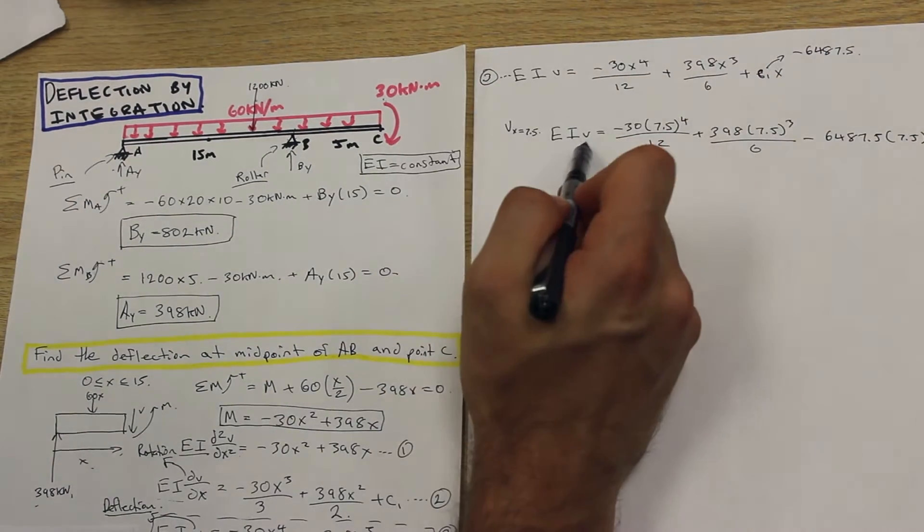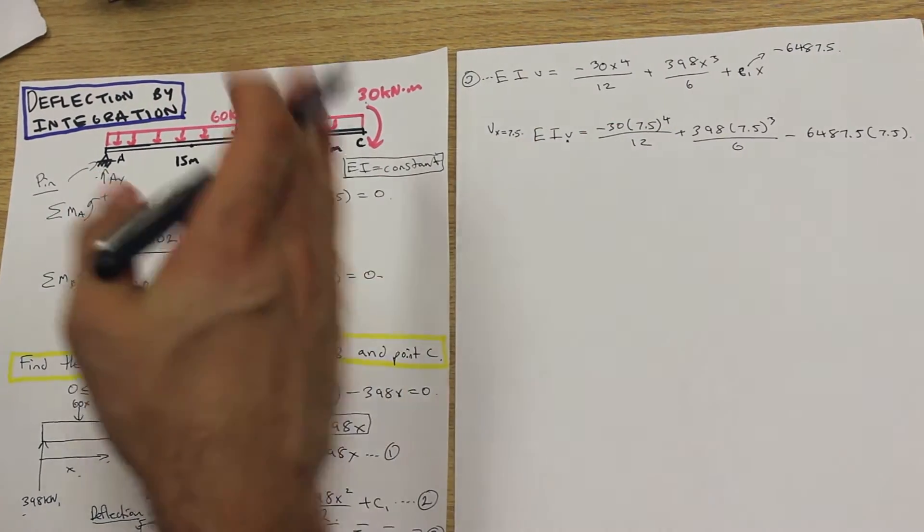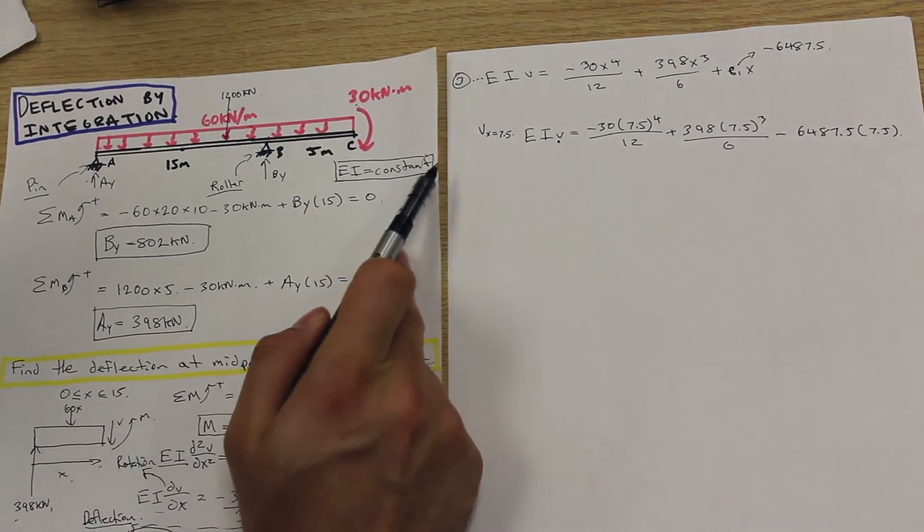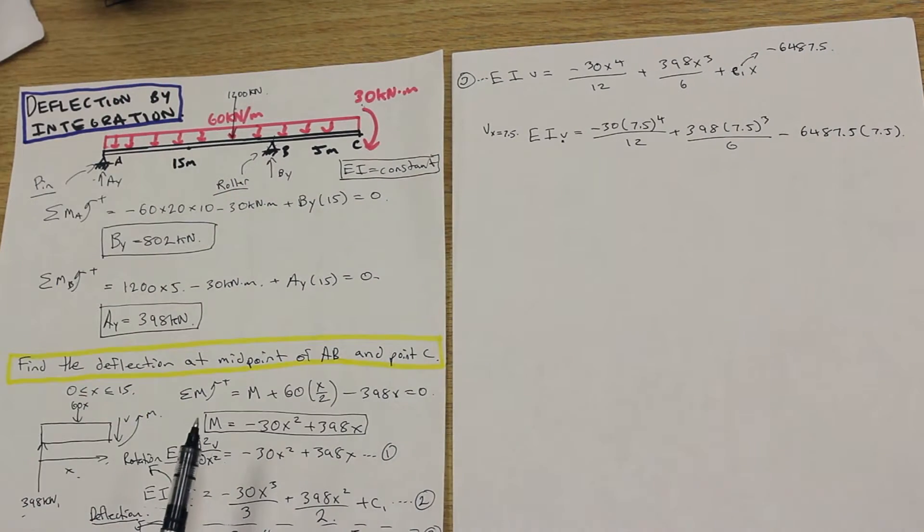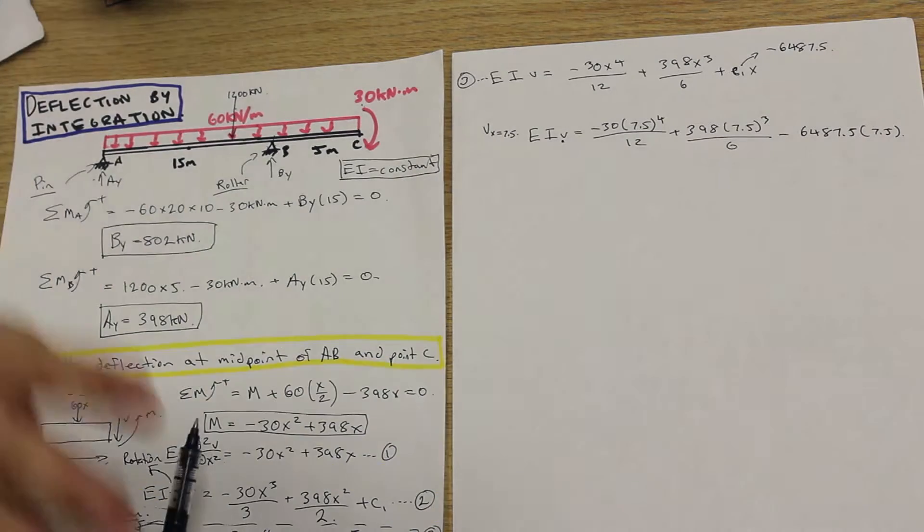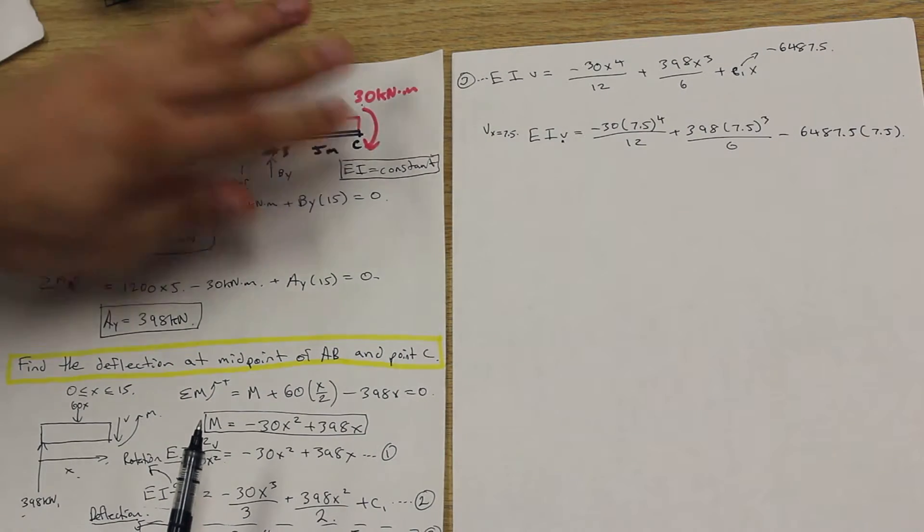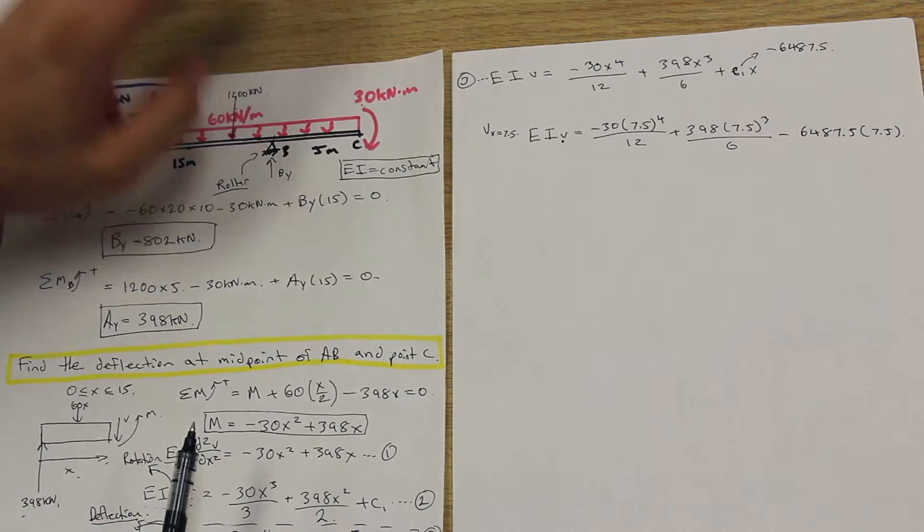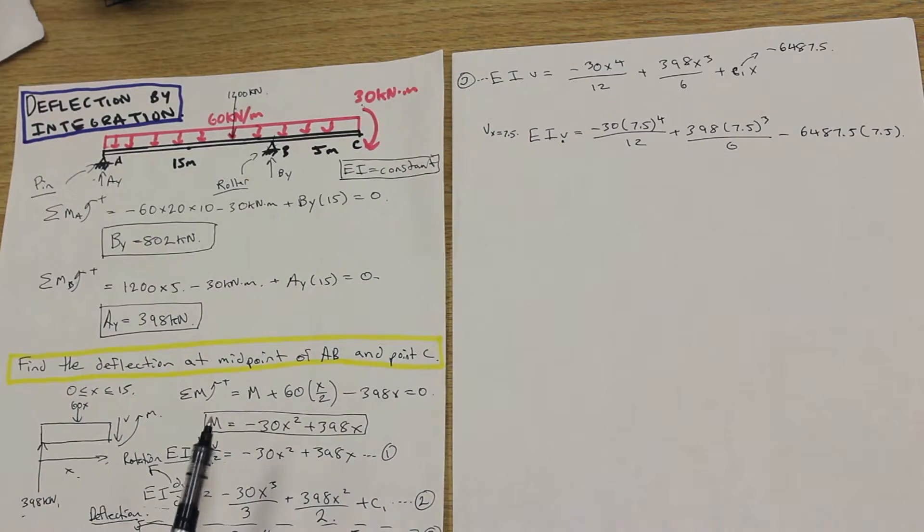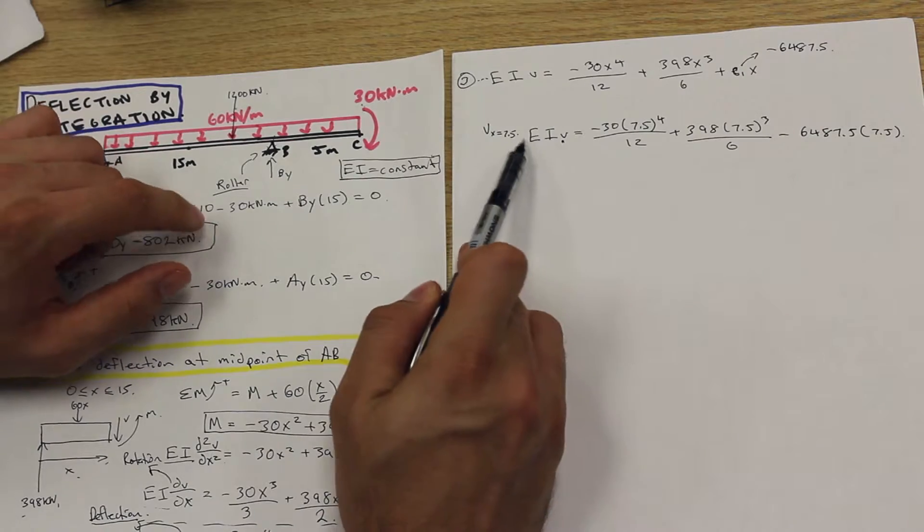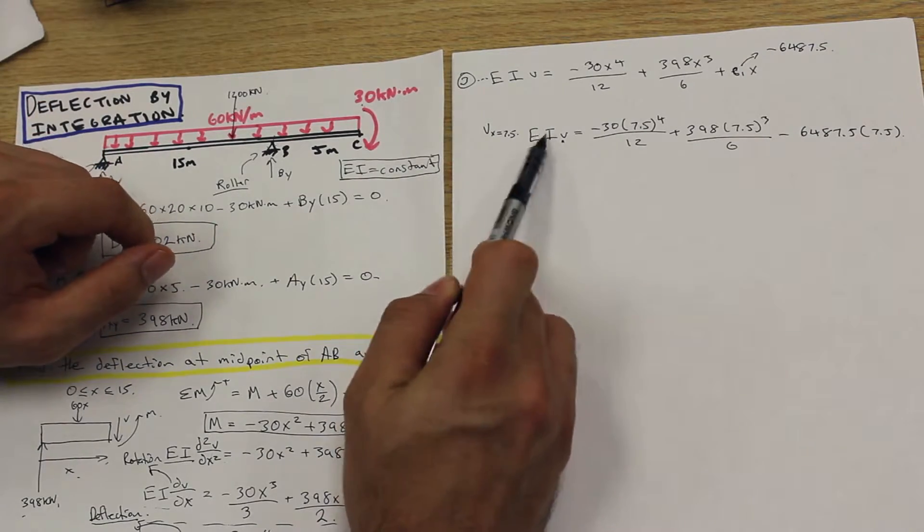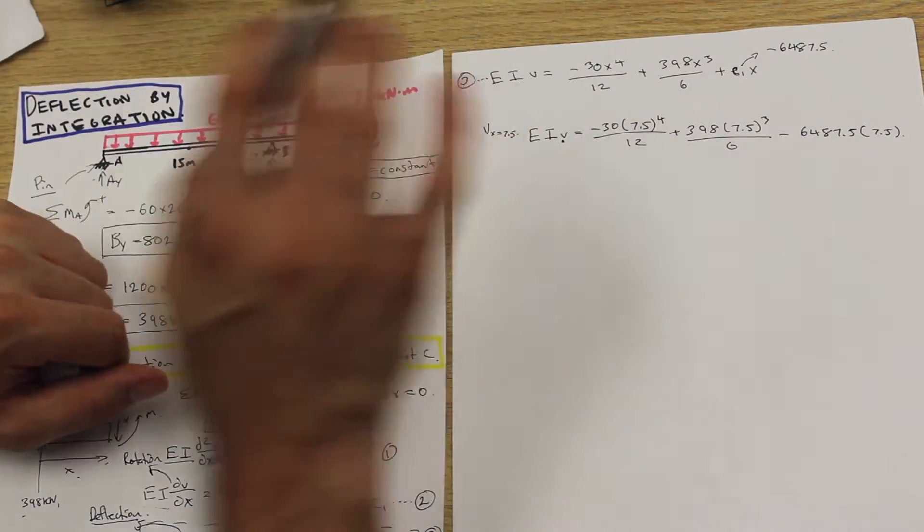And we're gonna isolate for V here. Now, if you remember at the start of the question, EI is constant. And you'll see this in a lot of the deflection questions, is that EI won't be given. Sometimes it will be given as a value, but in this case, it's not. And it's exactly the same process if it's constant or if it's not constant. All that means is that you just need to leave EI as is in the equation. So don't sub in any numbers here. Just consider them constants and that's fine.